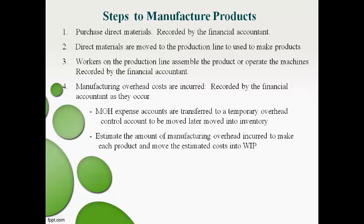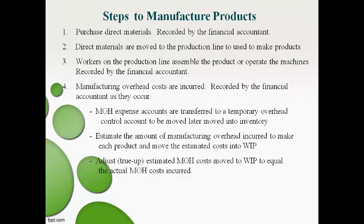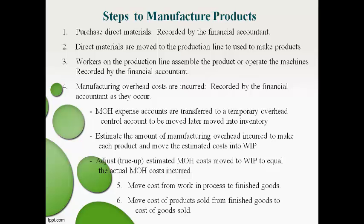An estimate of what it costs to make the products is used to move manufacturing overhead costs into inventory, because the actual cost to make each product is not known. The estimated cost is compared to actual manufacturing overhead costs, and an adjustment is made to get the manufacturing overhead and work in process to equal the actual cost. All product costs are moved to work in process first, then to finished goods when the product is completed, and then to cost of goods sold when the products are sold.